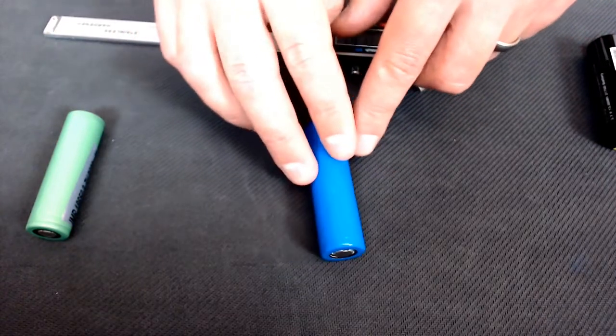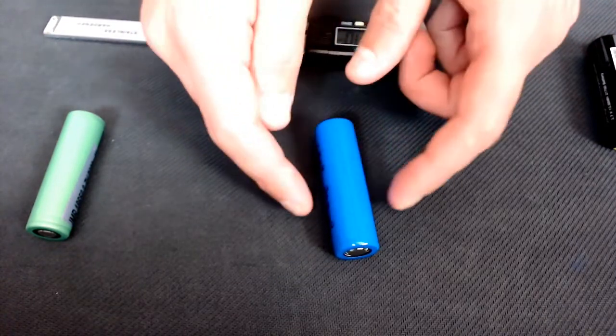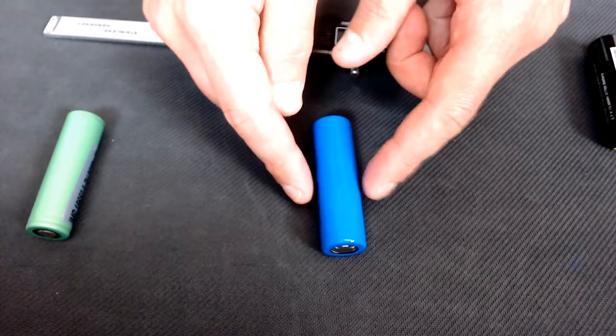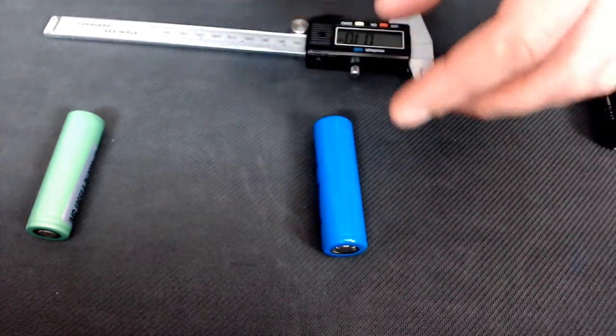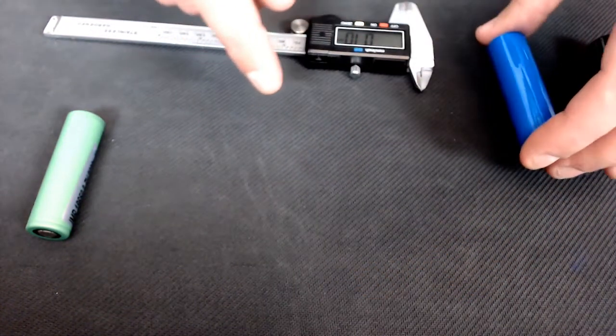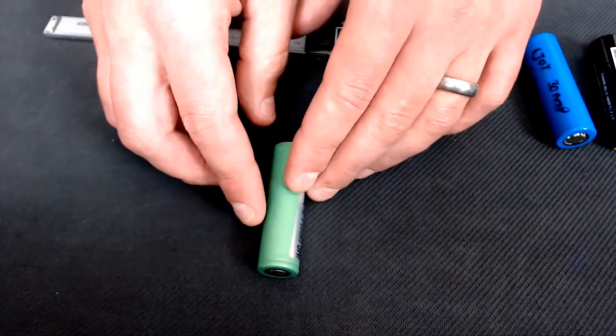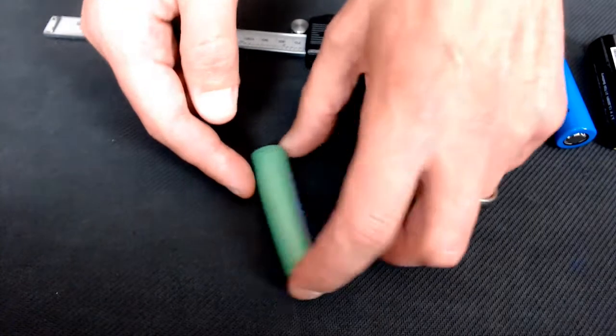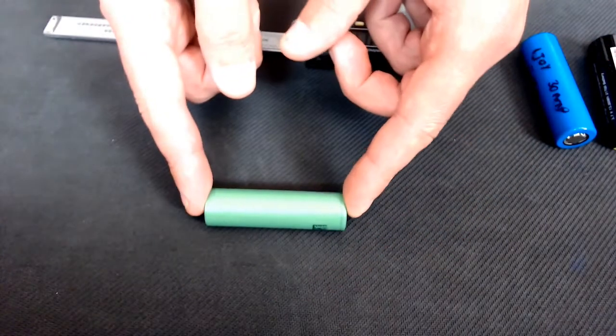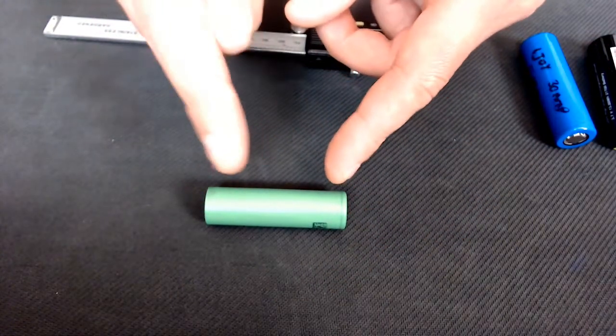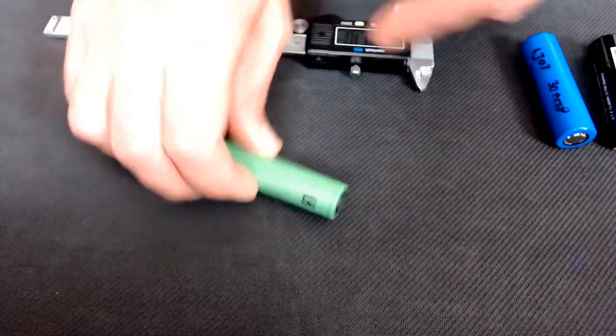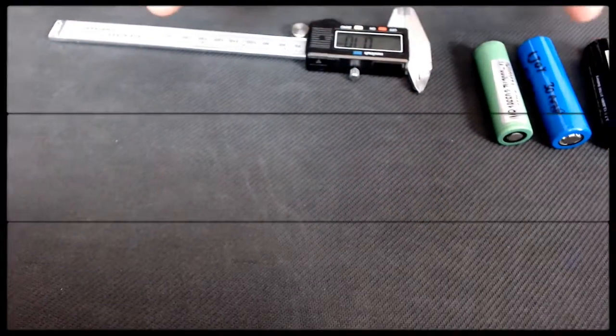The same principle follows for the 20700 - this one is 20 millimeters in diameter, 70 in length, and then the extra zero. 18650s are 18 millimeters in diameter, 65 millimeters long - 18650. So that is why they are named the way they are.